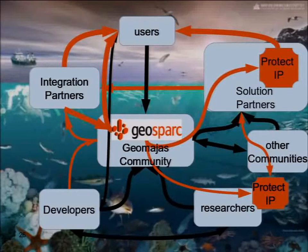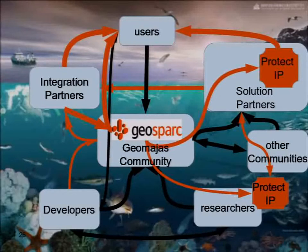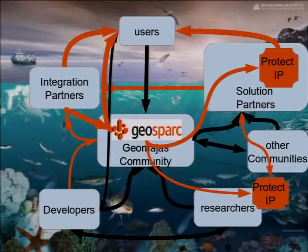And then the integration partners are creating solid, sustainable systems, and they need support. So we provide support-level agreements to the end users, for which they pay GeoSpark. And GeoSpark uses and reinvests a lot of money back into the community. So this is one use case, one example of how you can create a sustainable business ecosystem with open source.